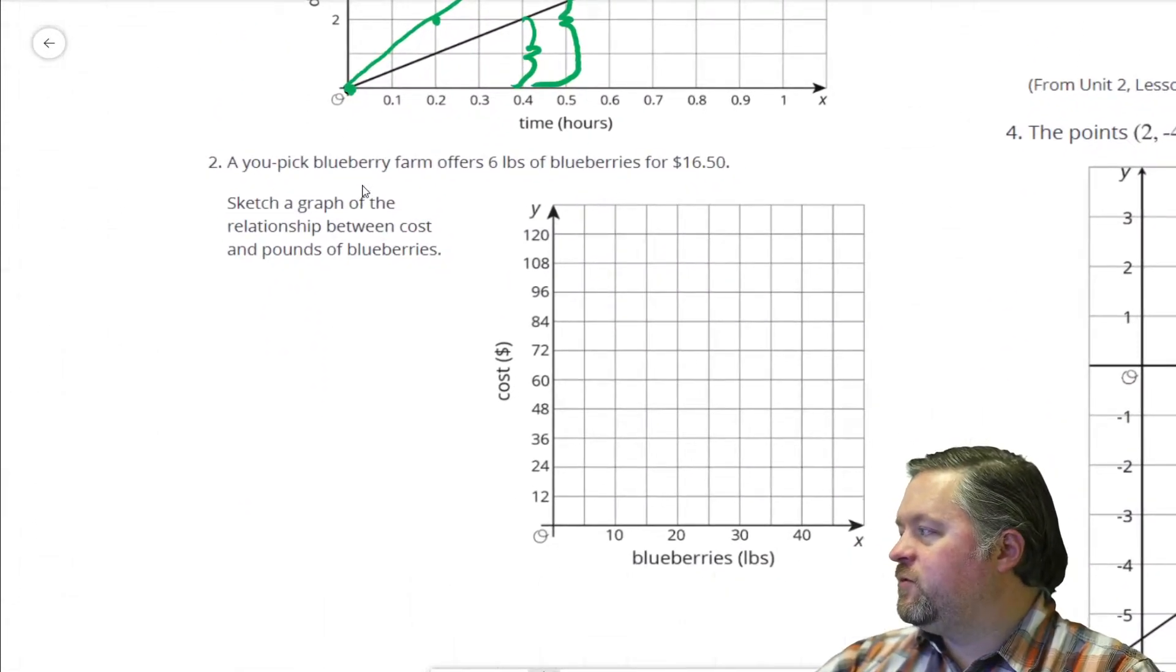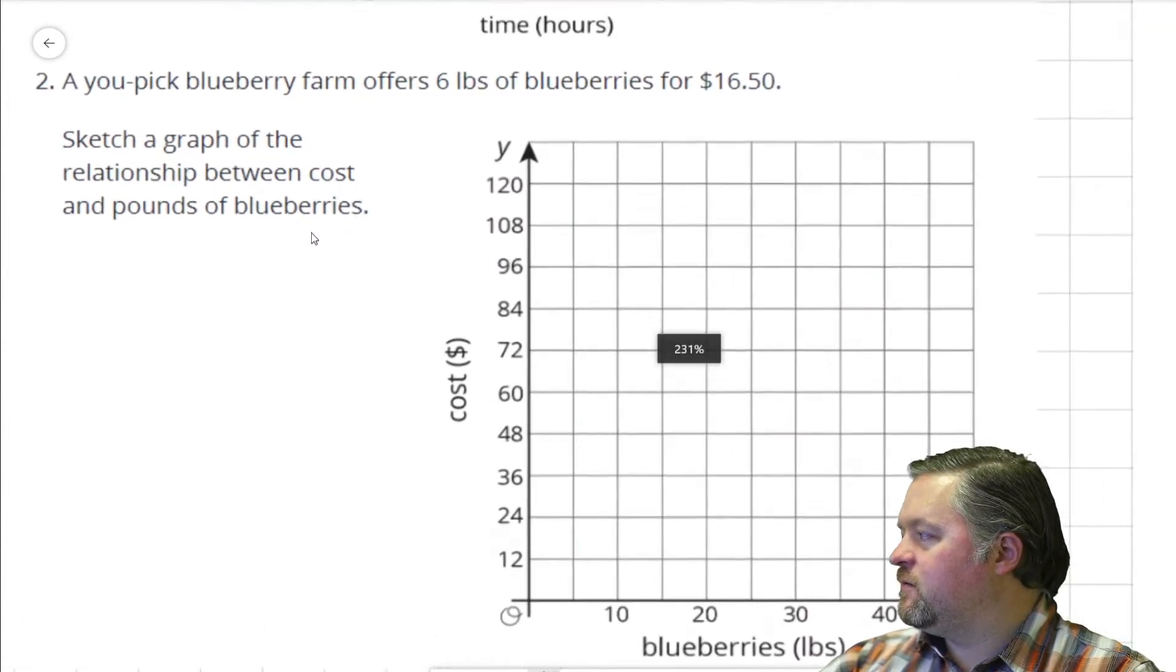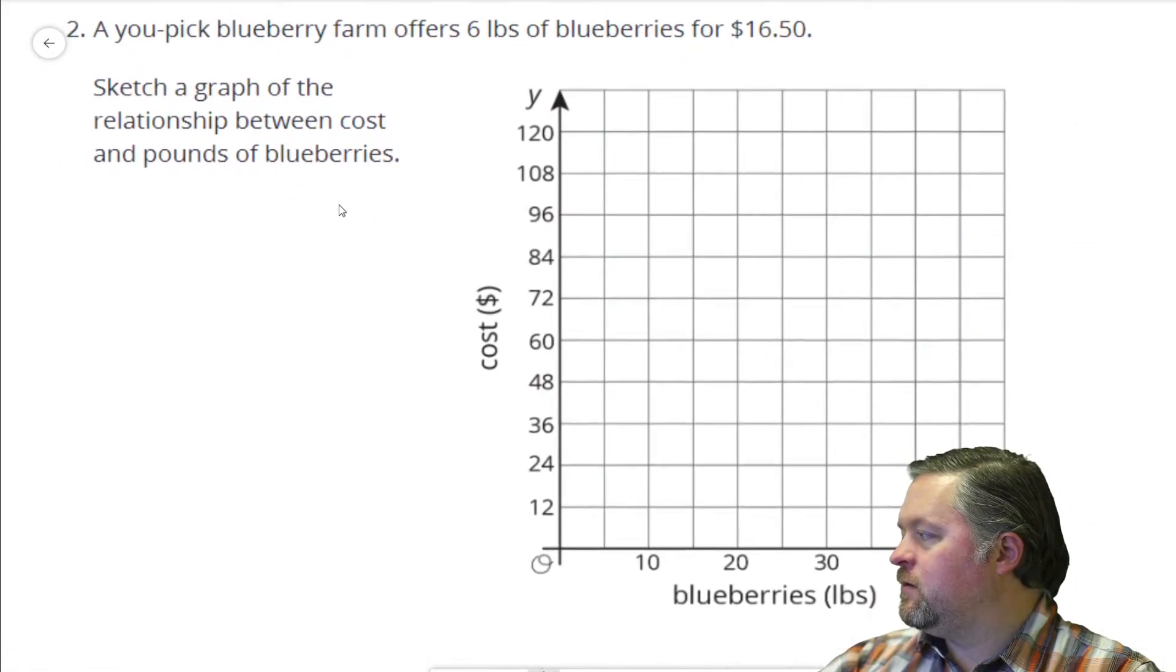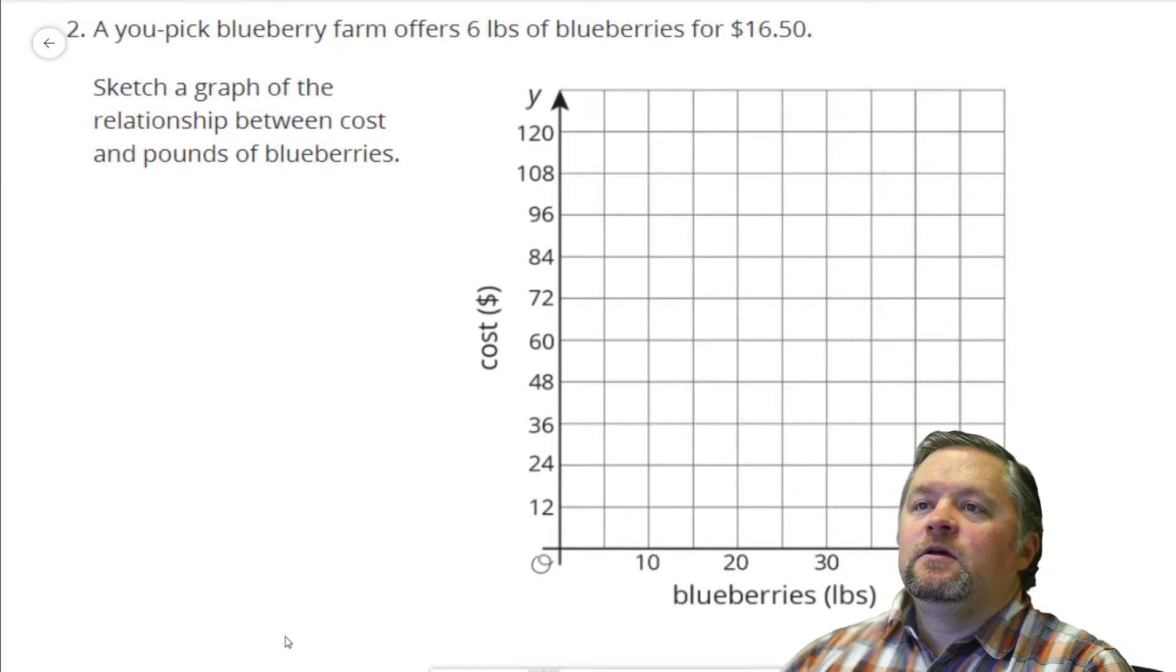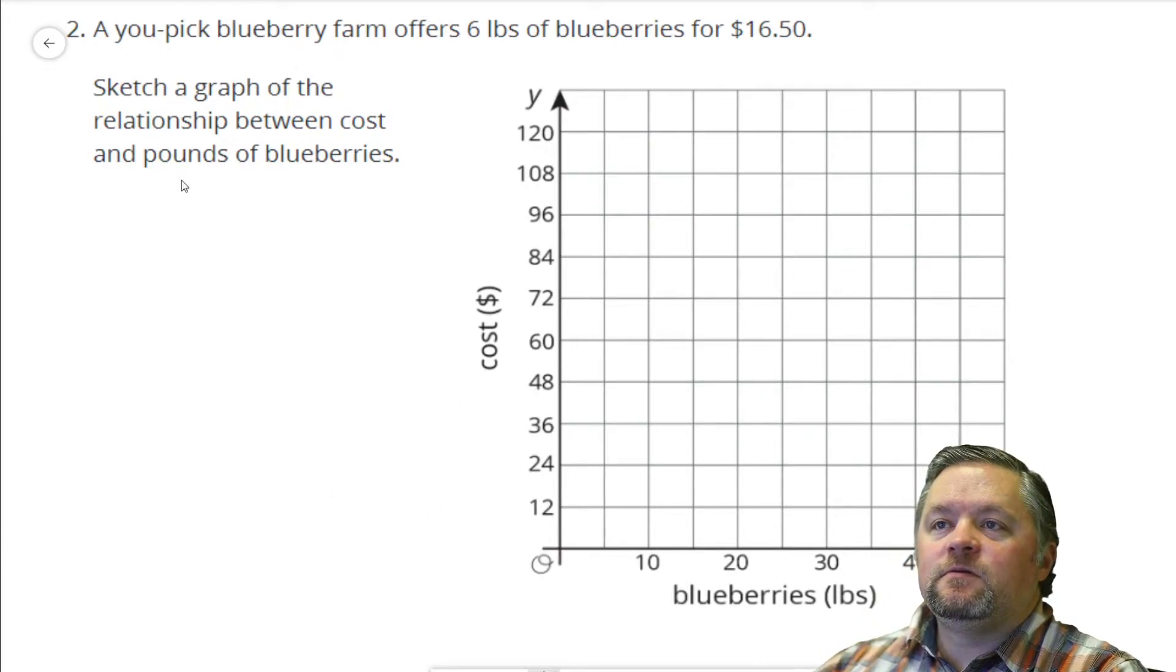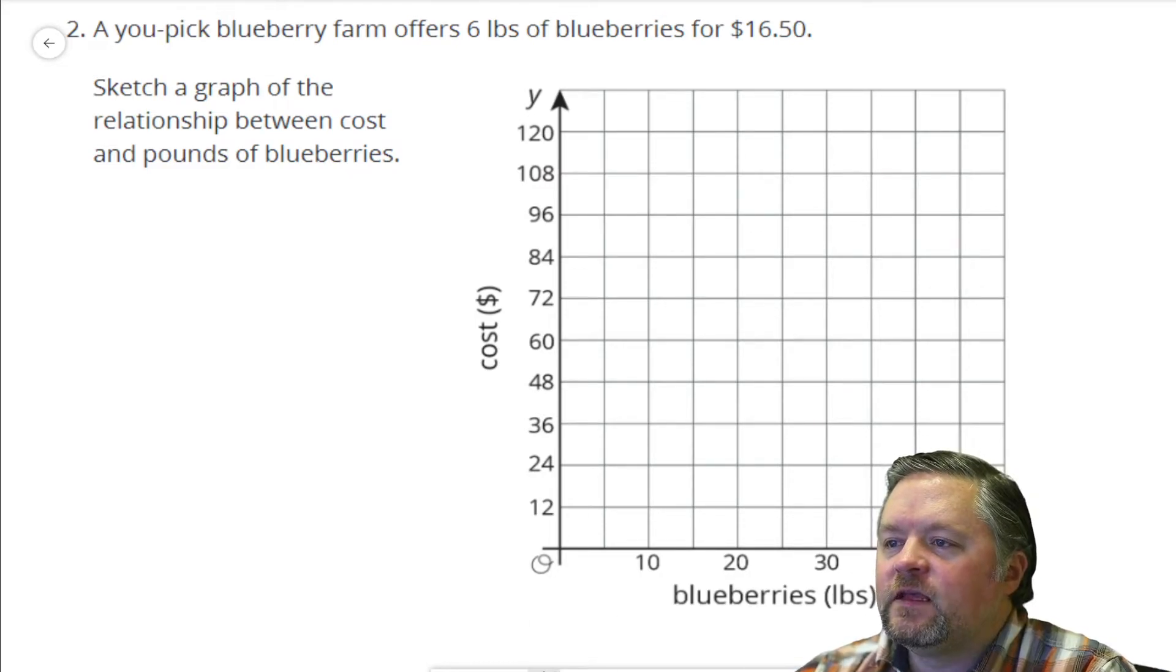A you-pick blueberry farm offers six pounds of blueberries for $16.50. Sketch a graph of the relationship between cost and pounds of blueberries. So six pounds is $16.50. That's kind of hard to get too exact on here.